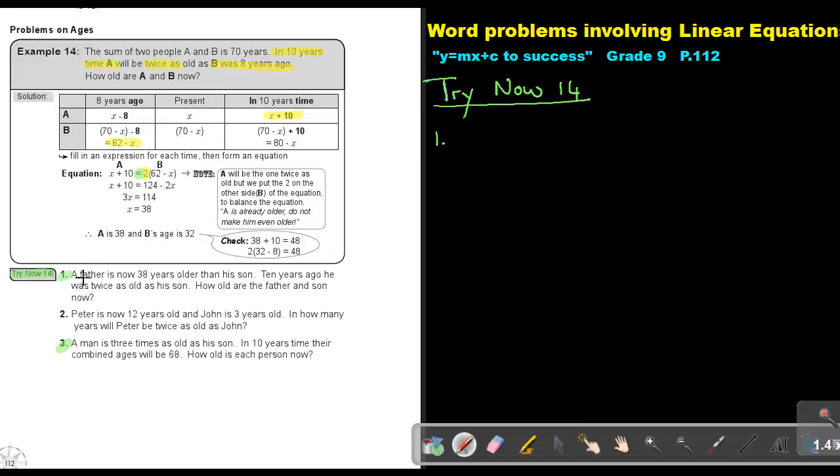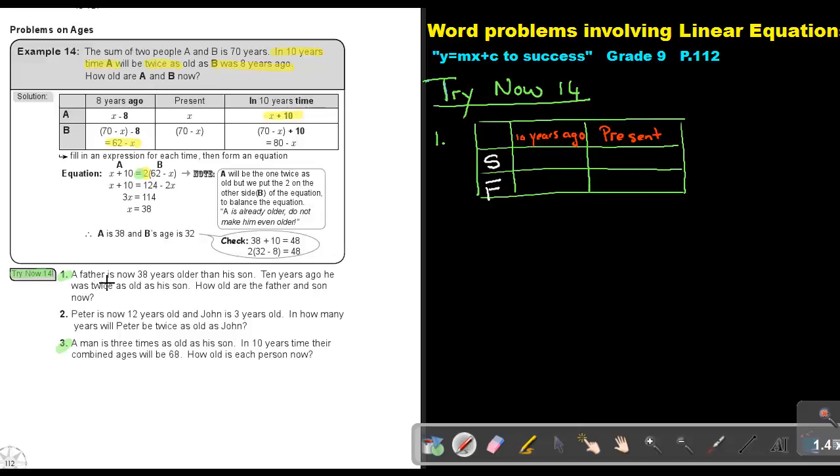Let's start with number 1. A father is now 30 years older than his son. 10 years ago, he was twice as old as his son. How old are the father and the son now? So if we make a table, it always helps us. This will be 10 years ago and the present. This is the son and this is the father. A father is now 30 years older than his son. So what will we make this son? X. Now if the father is 30 years older, it will be X plus 30.